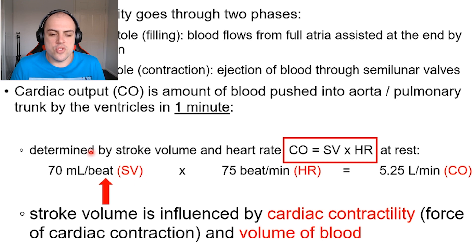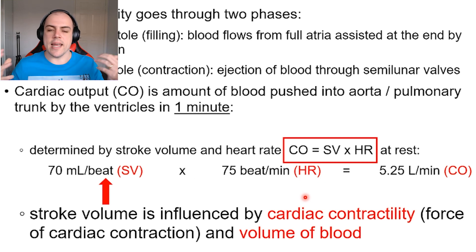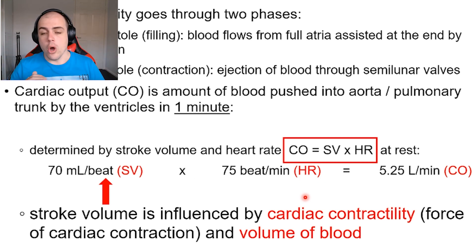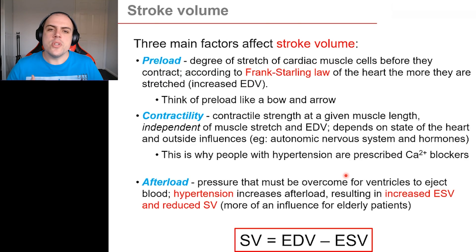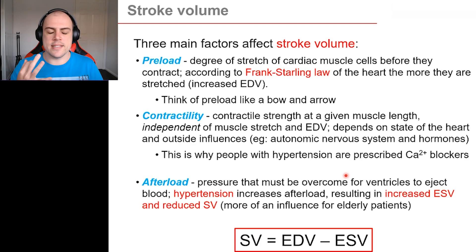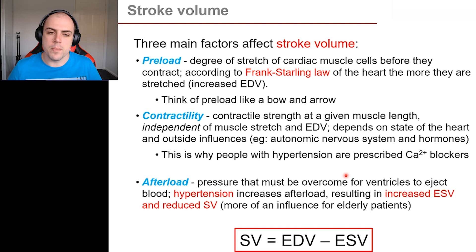Stroke volume, like heart rate, is never static — it does change. There are several factors that go into controlling stroke volume. In terms of stroke volume, there are three main factors that control how much blood is ejected from the heart per cardiac cycle.